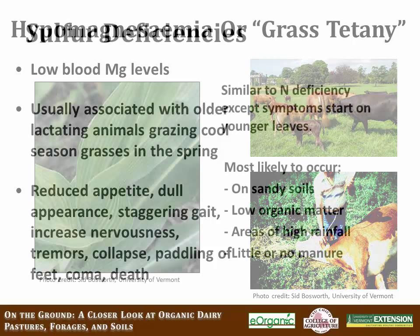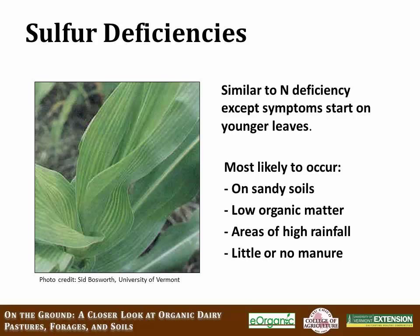Sulfur deficiencies can also be common and have been seen across the United States. They look very similar to nitrogen deficiencies, except the symptoms start on the younger leaves, not the older leaves. We can see sulfur deficiencies on sandy soils, soils of low organic matter, and especially in areas of high rainfall on fields that have little or no manure. Sulfur has a negative charge, so it does not stick to the soil and is easily leached.